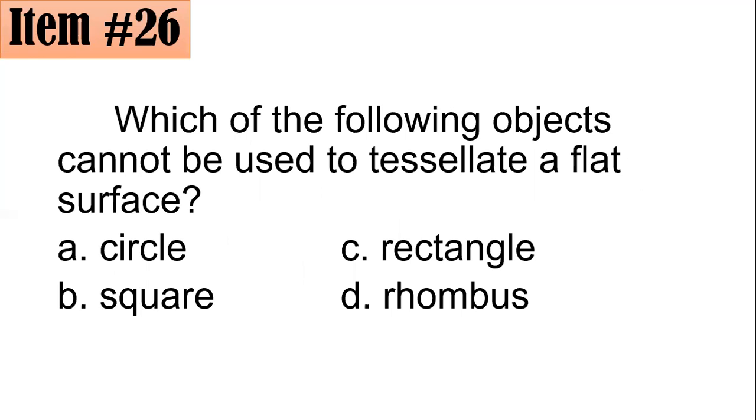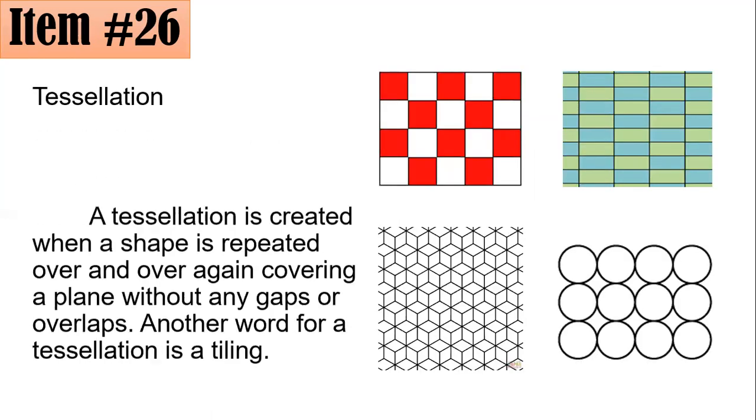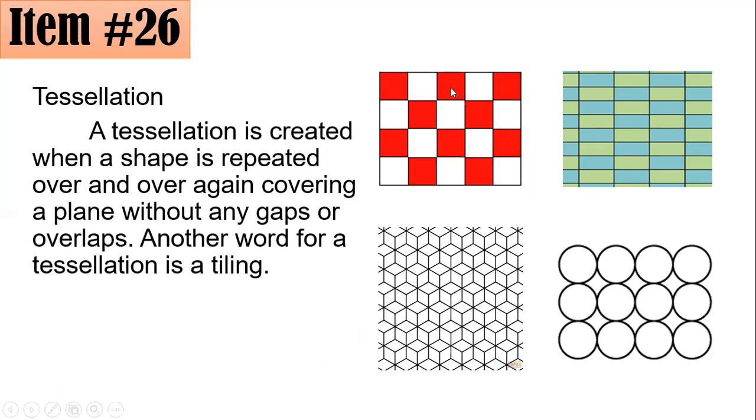When we speak about tessellation, tessellation is in fact created when a shape is repeated over and over again, covering a plane without any gaps or overlaps. Another word for a tessellation is a tiling. So if you could see squares here, if you have the squares, so it could tile a flat surface. So a square tessellates.